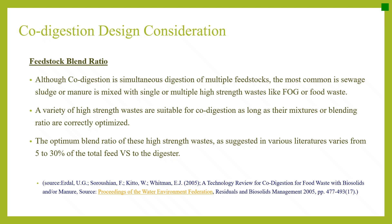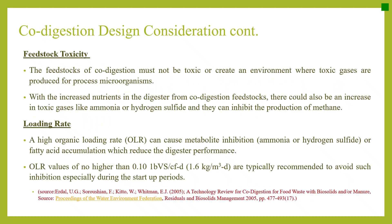If the blend ratio exceeds this, it may result in various process upsets due to product toxicity in later stages. The feedstocks of codigestion must not be toxic or create an environment where toxic gases are produced. With increased nutrients in the digester from codigestion feedstocks, there could also be an increase in toxic gases like ammonia or hydrogen sulfide, which can inhibit methane production. A high organic loading rate (OLR) can cause metabolite inhibition — ammonia, hydrogen sulfide, or fatty acid accumulation — which reduces digester performance.